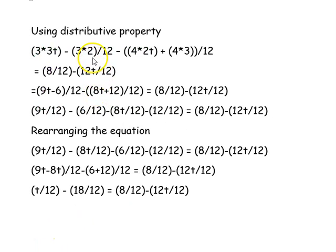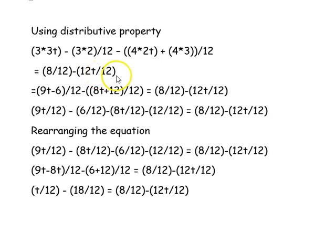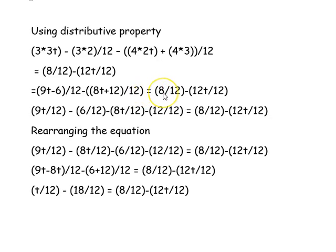In the next step we apply the distributive property. So on the left-hand side: (3 times 3t minus 3 times 2) over 12, minus (4 times 2t plus 4 times 3) over 12. On the right-hand side: 8 over 12, minus 12t over 12.